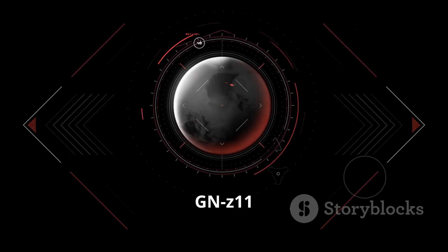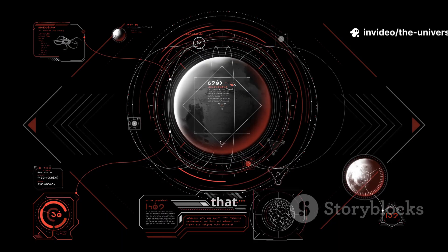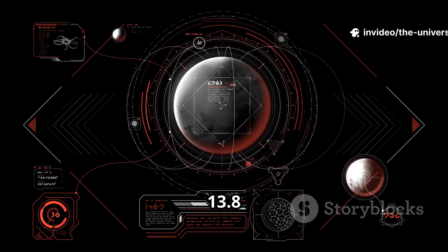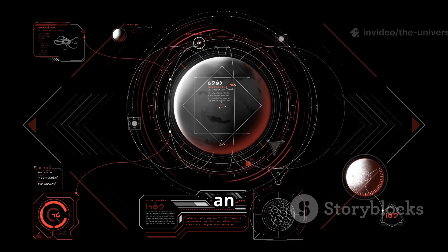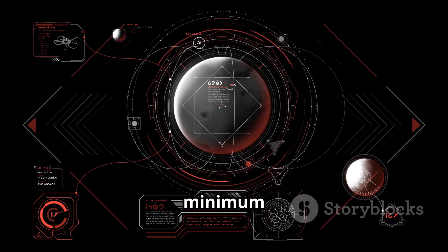Objects like GNZ 11 can thus be thought of as establishing a minimum size of the universe. But given that it's 13.4 billion years old, and the universe is 13.8 billion years old, then surely it should be possible to image an object that's even older and thus further away and that would extend this minimum size yet more.